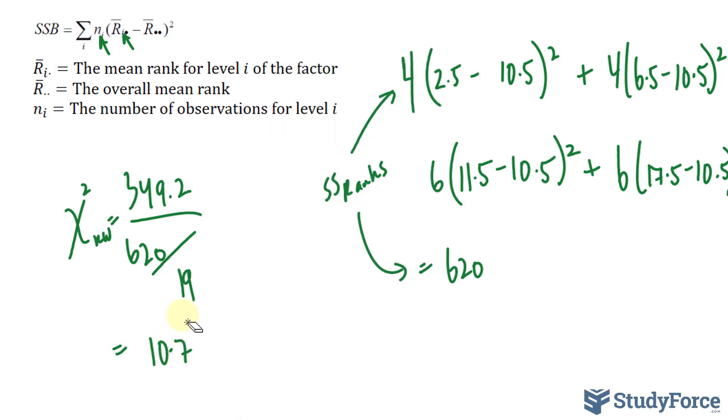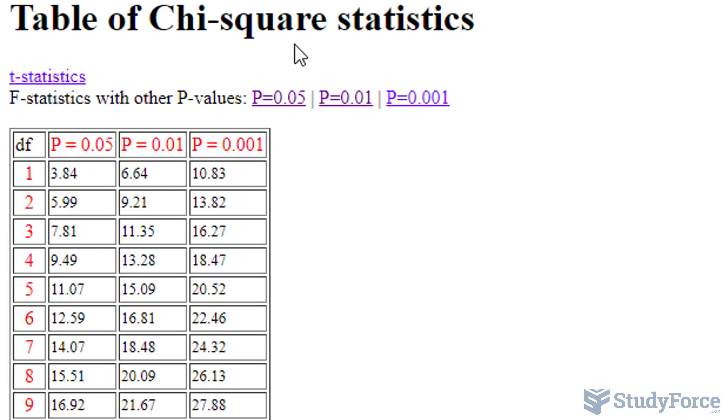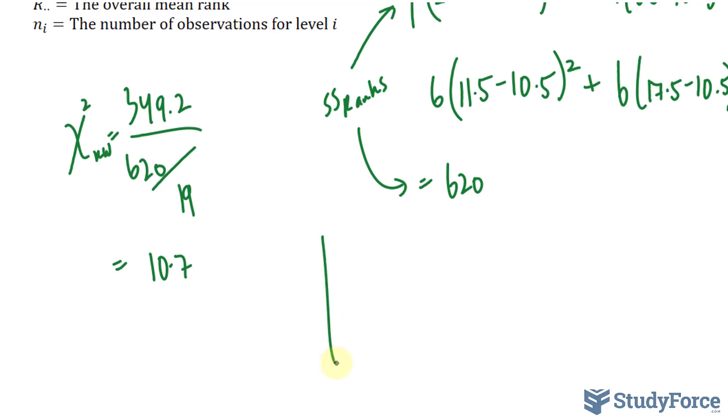This is the observational value that we'll be comparing to the critical, which we'll obtain from a table. Using a degrees of freedom of k minus 1, where k represents the number of treatments, we have a degrees of freedom of 3, and with a degrees of freedom of 3, you should end up with a chi-square critical value that's 7.81.